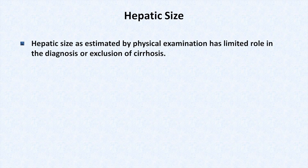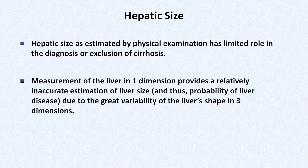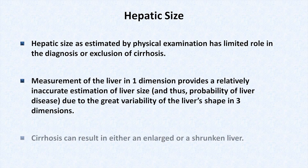Notably, examination of the liver itself has limited role in diagnosing cirrhosis. While detection of a firm nodular liver edge on palpation may suggest cirrhosis, estimation of hepatic size on exam is limited. Measurement of the liver in a single dimension provides a relatively inaccurate estimation of size due to the great variability of the liver's three-dimensional shape between individuals. Most importantly, cirrhosis can result in either an enlarged or, once advanced, a small shrunken liver.